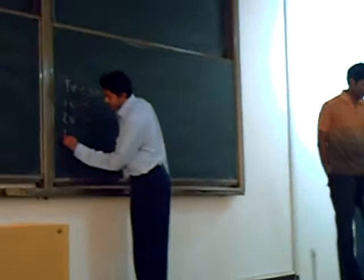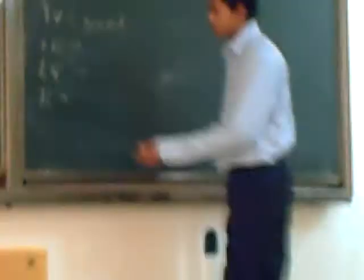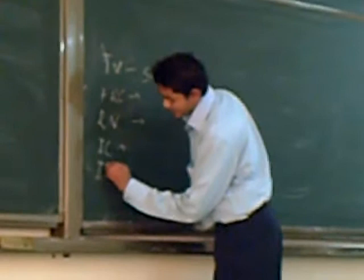Inspiratory capacity is the amount of air which can be inspired from the position of FRC. Inspiratory reserve volume is the amount of air which can be inspired after normal expiration.